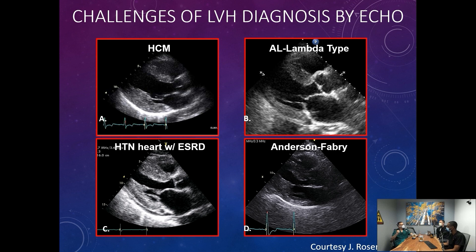HCM causes abnormal thickening of the heart muscle. The muscle is less efficient at contracting because of what we call fiber disarray — the myocardial fibers, instead of being parallel, are oriented somewhat haphazardly. So the heart doesn't have as much strength, and this perhaps causes a compensatory increase in thickness. We're not entirely sure how all of that happens, but these hearts are quite thick.